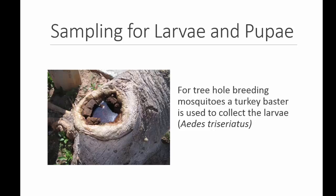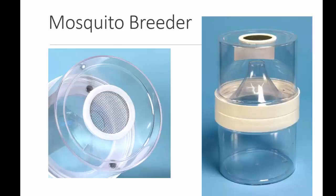Tree holes provide breeding sites for a variety of mosquitoes. Parks and hardwood stands in towns can be surveyed for tree holes and marked on habitat maps. These holes can be treated or sealed with some sort of tree patch material or possibly filled with sand. Once collections of larvae or pupae are made, mosquito breeders can be used to allow the mosquitoes to complete their life cycle and contain the mosquitoes for identification more easily.